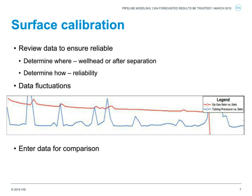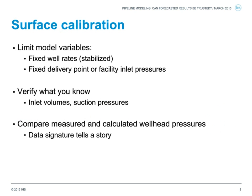If we look at the rate history for individual wells shown in red, we can see a purely stable rate history. But looking at the blue lines, we see fluctuation in our pressure data. If this fluctuation is between 150 kPa or 20 psi, we know we are not going to be able to calibrate our system any closer than that. Once we determine and look at the data, we can enter it into our model for comparison of measured versus calculated pressure.